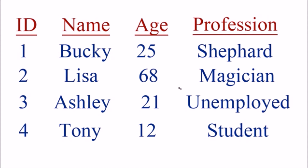Say you ask the database to find all the Ashleys who are 21 and unemployed — that may give you 500 results. But we only want one specific Ashley, so instead we say find the person with an ID of three. That is why you use a primary key — it's guaranteed to return only one result. If Ashley needed to be removed from the database, instead of saying remove Ashley, which might remove 500 people, we just say remove the person with ID of three, and we didn't screw up our database.